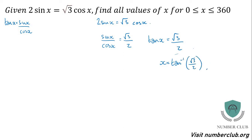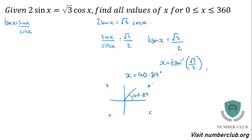So x will equal inverse tan of root 3 over 2. Make sure you tap across when you put your root 3 — after you put your 3, if you don't tap across, you'll end up with root of 3 divided by 2, so root of 1.5, which is no good. Use the fraction button to be safe. You'll find that x is equal to 40.89 degrees. Casting: where else is tan positive? That's the third quadrant. So we've got 40.89, and added to 180 will be 220.89 degrees.